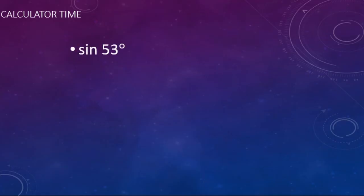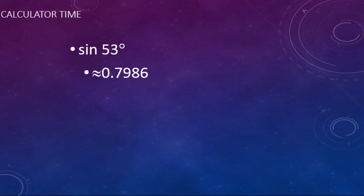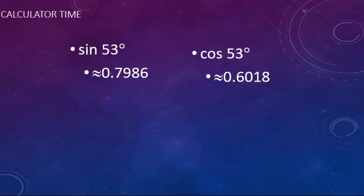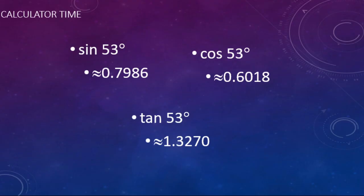Time to get out your calculators. Let's do sine of 53 degrees - go ahead and pause the video. You should have seen 0.7986. You've got to check your calculator and make sure you're not in radians - this needs to be in degree mode. If you get not 0.7986, you're probably in radians, abbreviated RAD on a lot of calculators. Switch that over to degrees and you should get it right. Let's check a couple more: cosine of 53 degrees should give about 0.6018. And tangent of 53 degrees gives 1.3270. Make sure you can get these in your calculator - you'll need them for the next step.